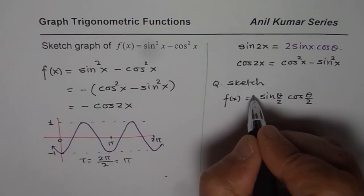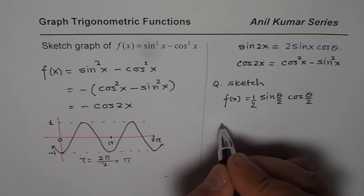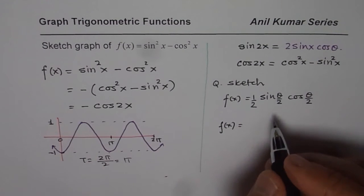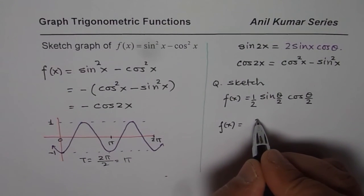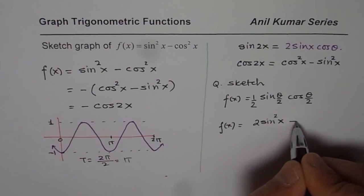Okay. Let me qualify it with half itself. Looks nice. And you can also sketch a function which could be 2sin²x - 1.